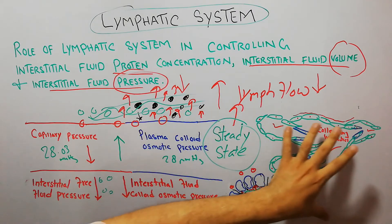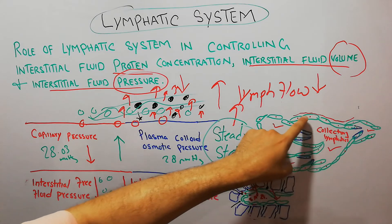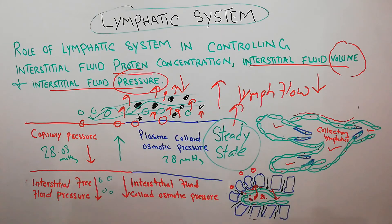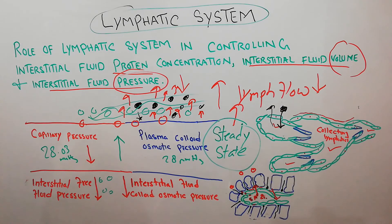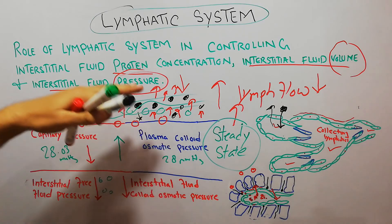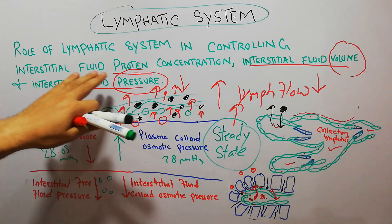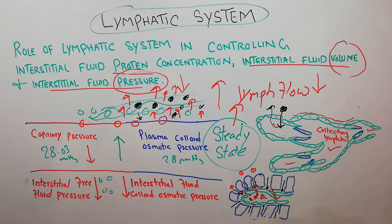This role is played by the lymphatic vessels and not by blood vessels because the endothelial cells of the lymphatic system are structured so that large particles like proteins can enter the lymphatic vessel but cannot exit. This allows them to transport large particles like proteins that normally cannot easily enter capillaries. That's all about the role of the lymphatic system in the maintenance of interstitial fluid protein concentration, interstitial fluid volume, and interstitial fluid pressure.